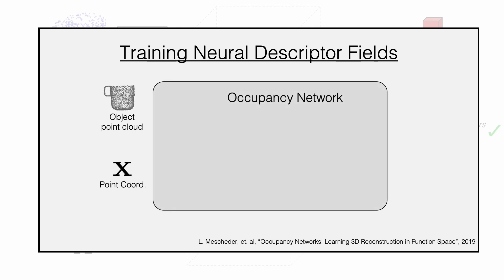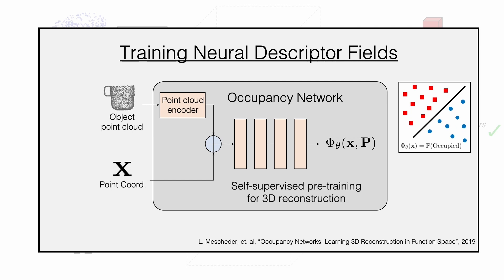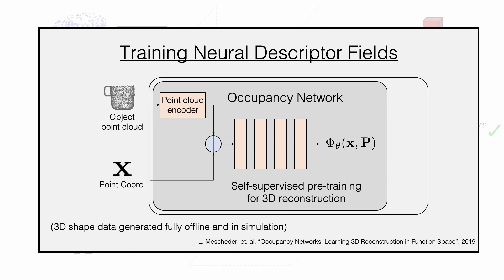Our approach is to construct descriptors using a neural implicit representation trained using self-supervised 3D reconstruction. Specifically, we train an occupancy network to map an object point cloud and any 3D coordinate to a binary value indicating whether the point is inside or outside the shape. Importantly, we train this representation using ground truth 3D shapes generated fully offline and in simulation. We find that the intermediate activations of the occupancy network can serve as descriptors that are consistent across shapes in a category. We thus propose to parameterize our point descriptor field as a function that maps every 3D coordinate to the vector of intermediate activations of a neural implicit shape representation trained for 3D reconstruction.